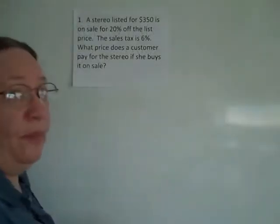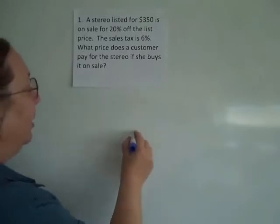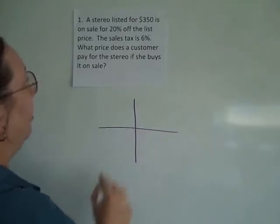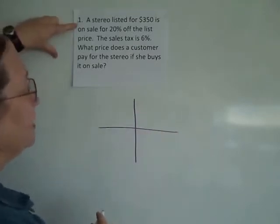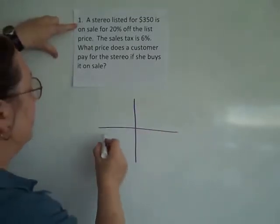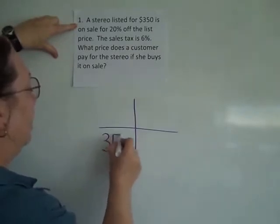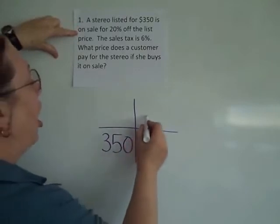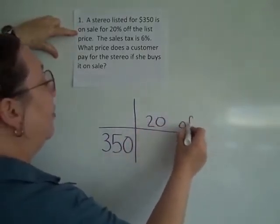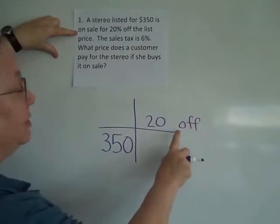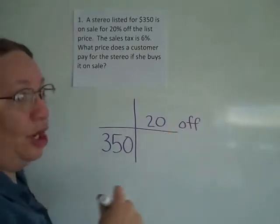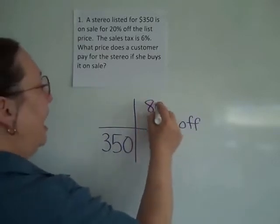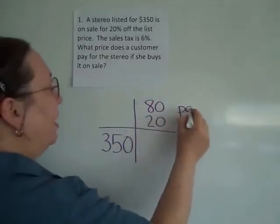To solve this problem, we're going to fill in a grid. Looking at the list price as the total amount — the $350 — and 20% off the list. Remember, if I have 20% off, that tells me automatically 80% is left for me to pay.